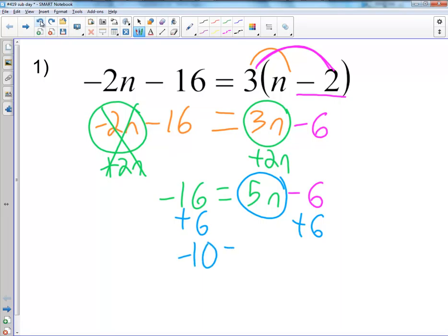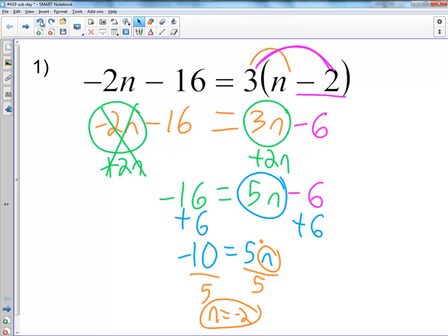Now realize I put that minus 6 still in purple because if I circle the variable and take care of the hater, it is the hater. Opposite of negative 6 is positive 6 so I add 6 to both sides. I get negative 10 equals 5n. Circle the variable, take care of the hater. The operation is multiplication so I'm going to divide by 5 and I'm going to get n equals negative 2.